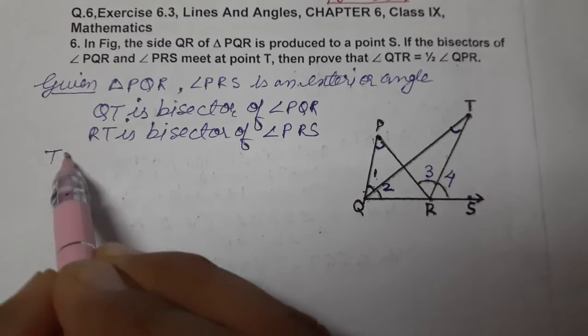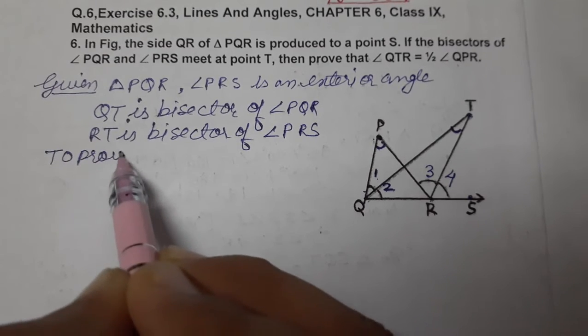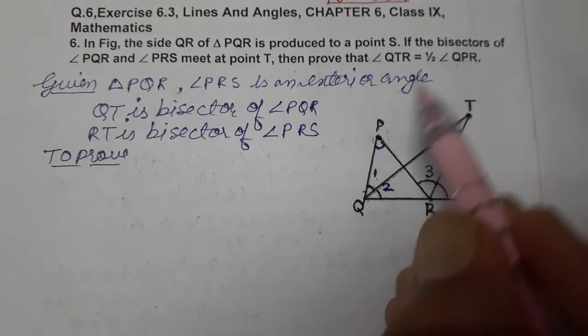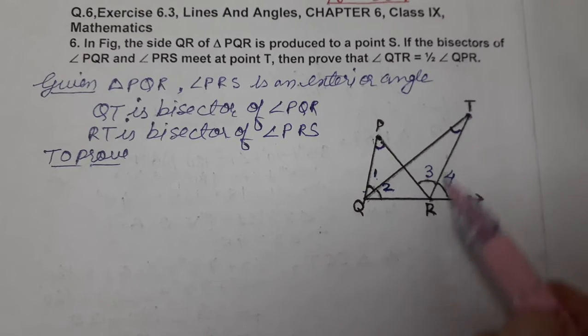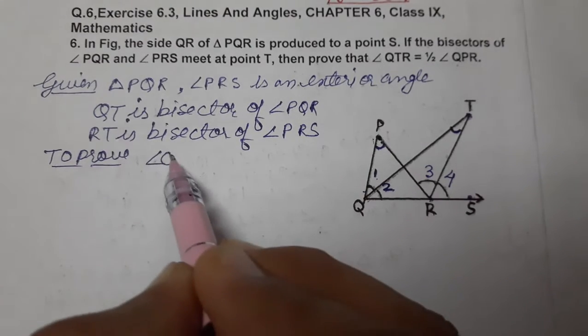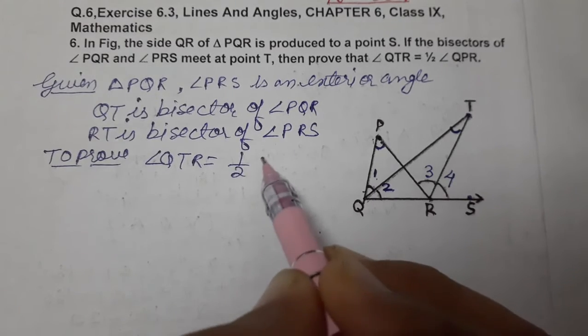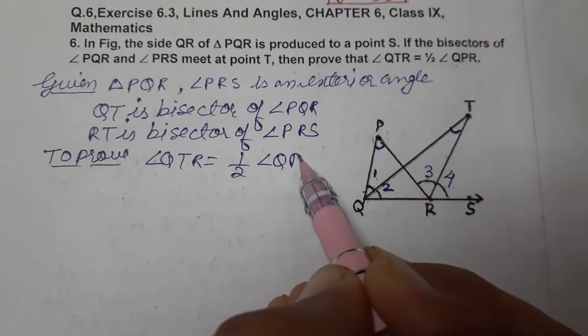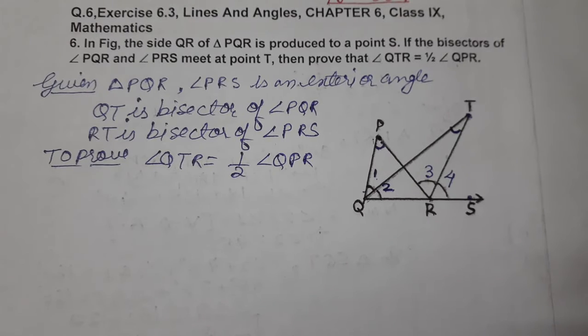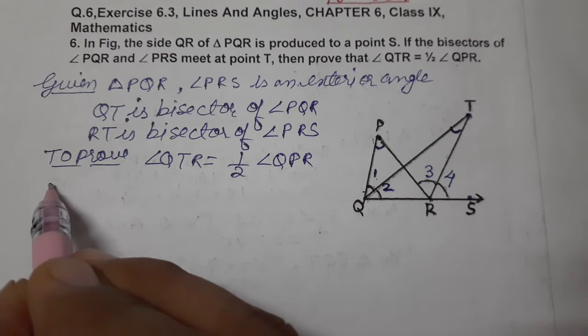Now we need to prove angle QTR equals half of angle QPR. So let's start the proof.